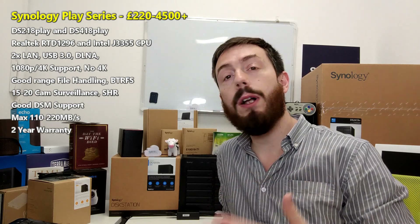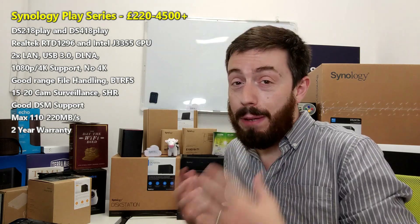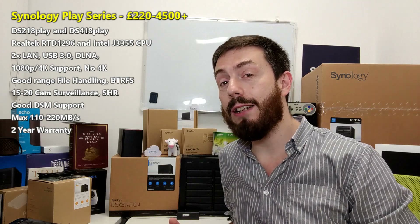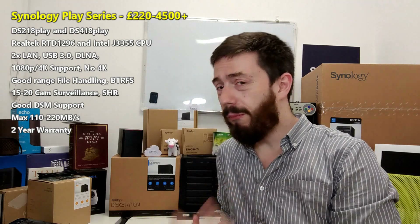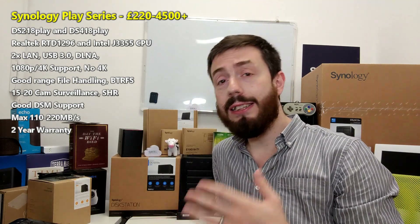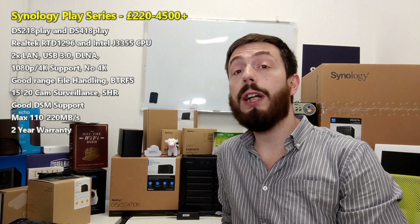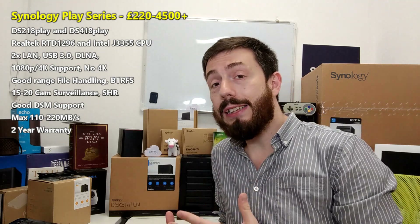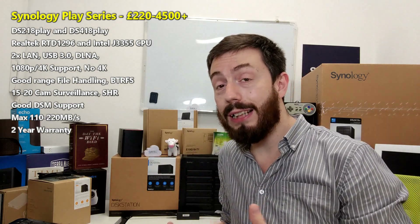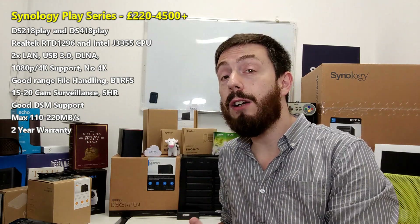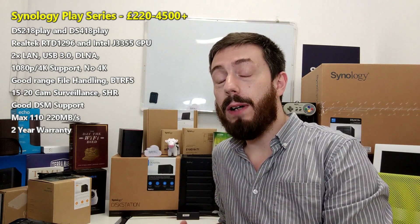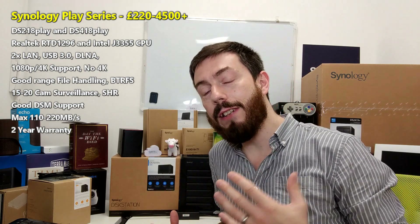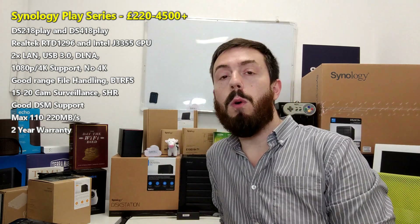In something like Plex, the 218 Play will struggle as a little 2-bay. Compared to its previous generations, it's actually a little bit disappointing. But with the 4-bay, things really get turned around — the DS418 Play has that great Intel-powered dual-core J3355 CPU, which can support Plex, 4K transcoding outside of Plex, and 1080p transcoding is more than possible on that CPU.